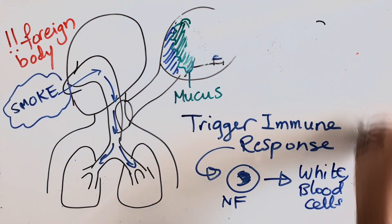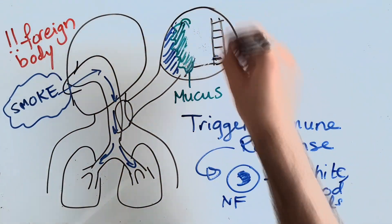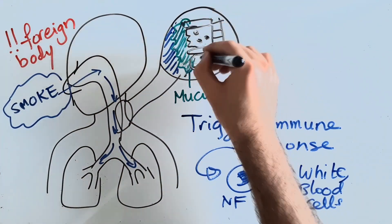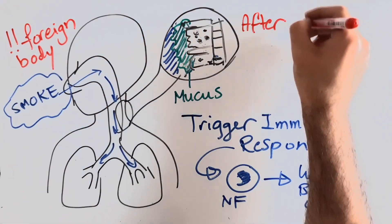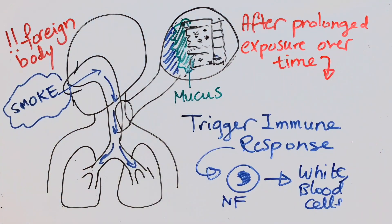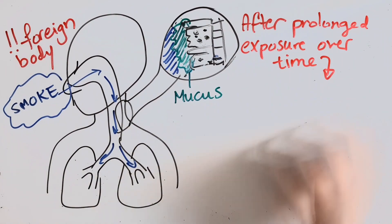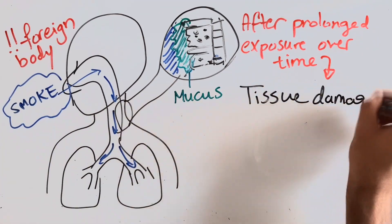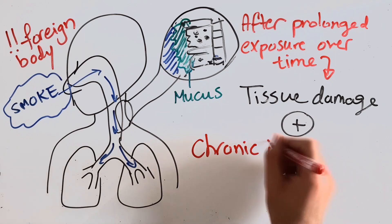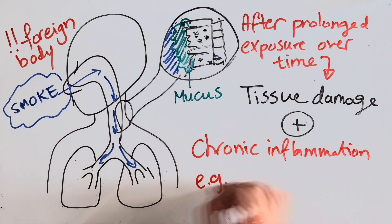affect the function of the cilia. Now this already triggers some sort of immunocompression in your lungs and this makes you more and more susceptible to having an acute infection with a virus or a bacteria.